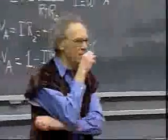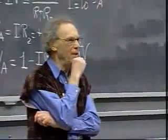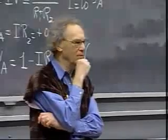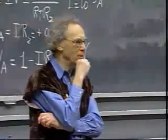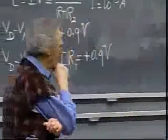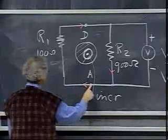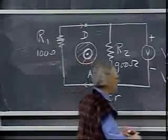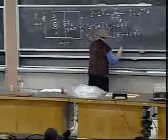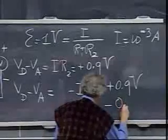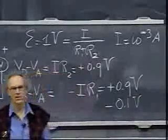And then I say, but now suppose we go the other side, and we want to know now what VD minus VA is. And now it's not so simple, because there's no battery. And so now when I go from D to A, I don't have this one, and therefore I now find minus 0.1 volts. I find a totally different answer.